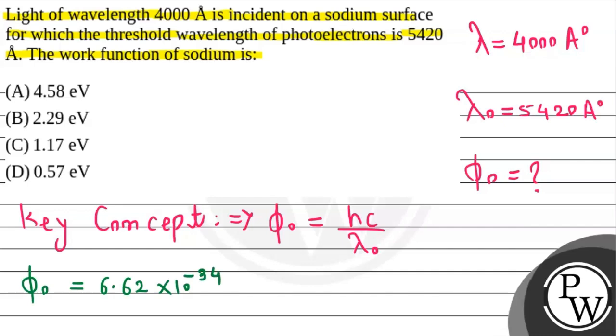Multiply by value of c which is 3 into 10 to the power 8 meter per second, divided by lambda naught which is given as 5420 angstrom.